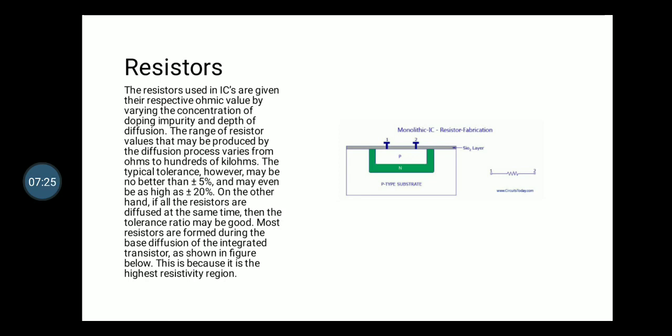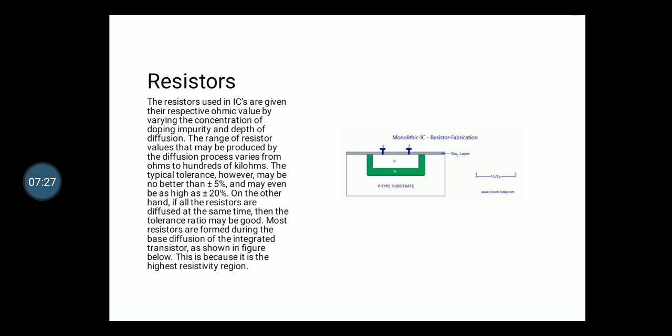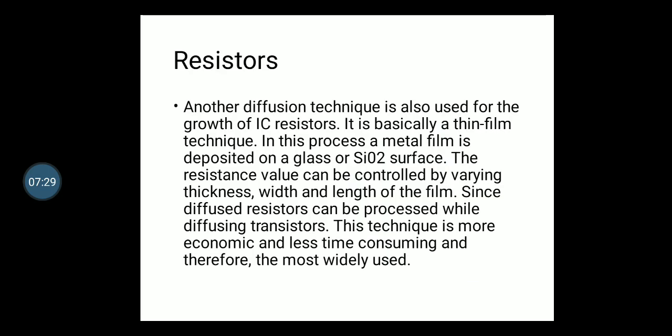Another diffusion technique used for the growth of IC resistors is basically a thin film technique. In this process, a metal film is deposited on a glass or silicon dioxide surface. The resistance value can be controlled by varying the thickness, width and length of the film. Since diffused resistors can be processed while diffusing transistors, this technique is more economic and less time consuming, and therefore they're most widely used.